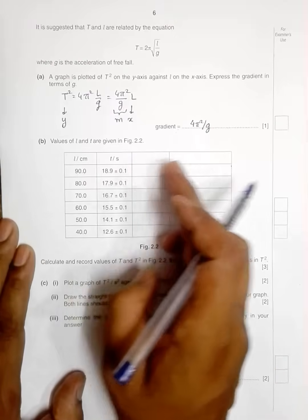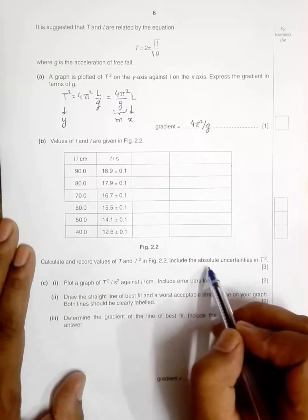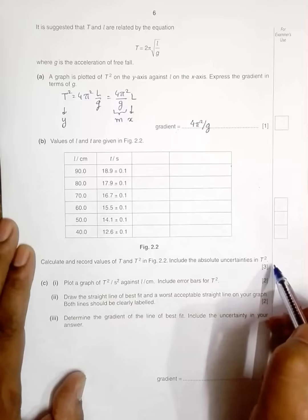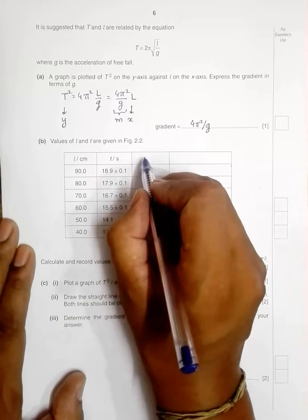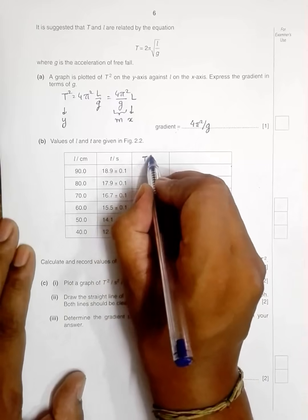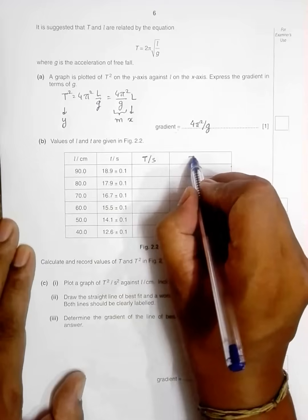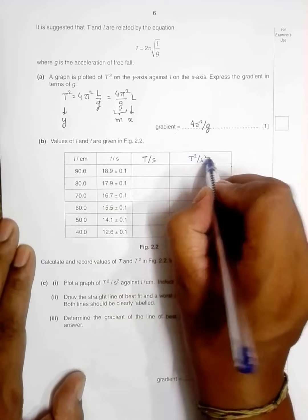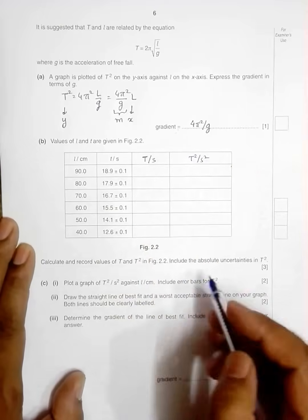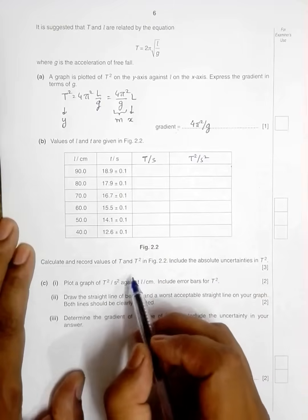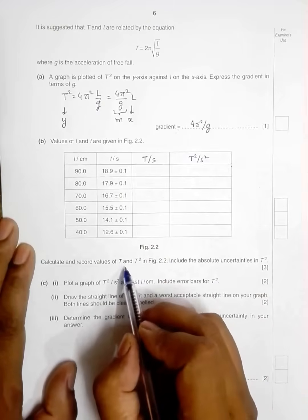Calculate and record values of T and T² in Figure 2.2. We have to use T here, T² here. Include the absolute uncertainties in T². So let's write the headings. It should be T in seconds and we have T² in second squared. So that scores one mark I suppose.